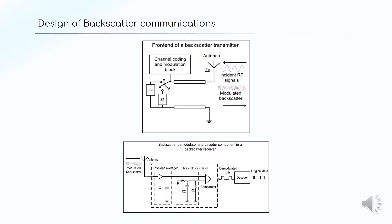Monostatic, bistatic, and ambient backscatter communications share the same principles of operation. The front end of the backscatter transmitter consists of an antenna and impedance loads to produce a modulated signal, which essentially reflects a signal for further use. With respect to decoding the modulated waveform, this is possible through a second circuit comprised of an antenna, a low pass filter, a comparator, and finally a decoder to recover the data.